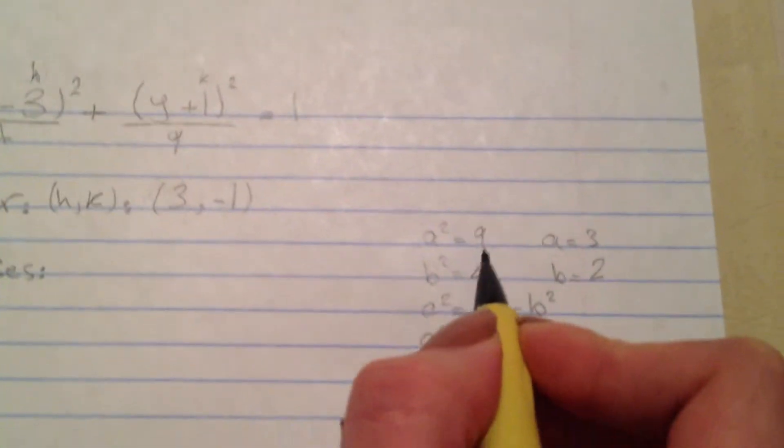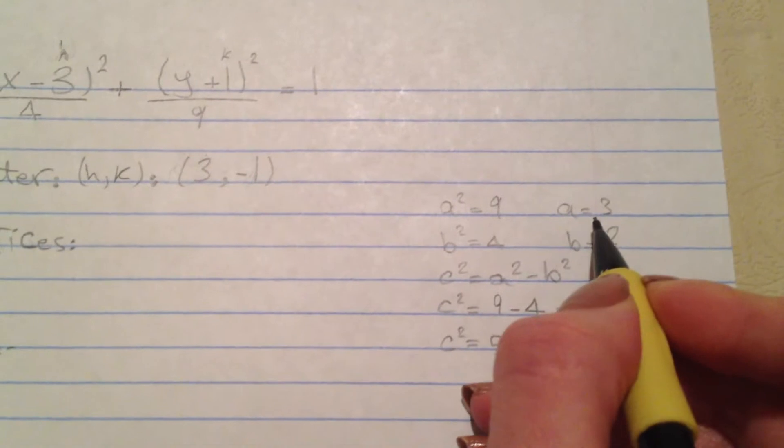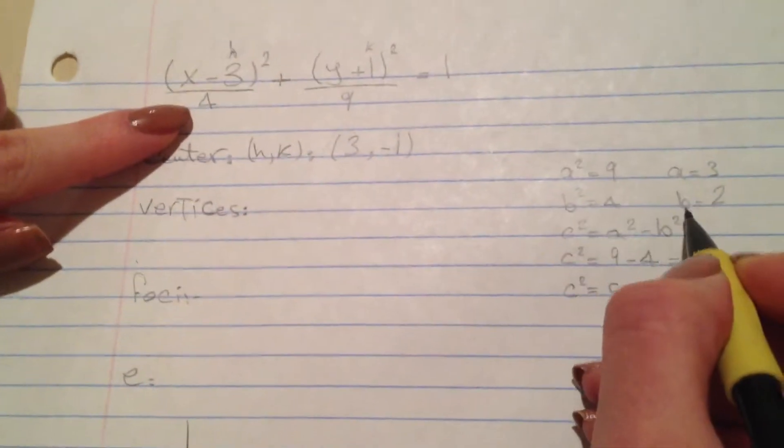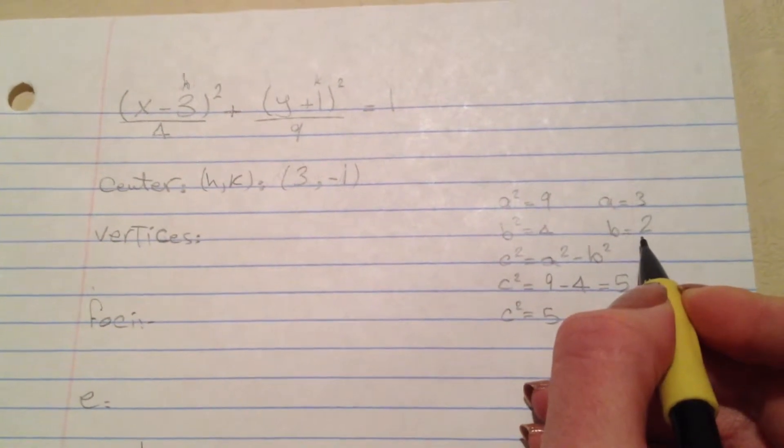Second we have to find a squared is 9 and a equals 3. Our b squared equals 4 which is b equals 2.